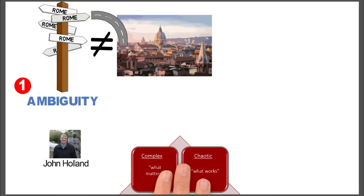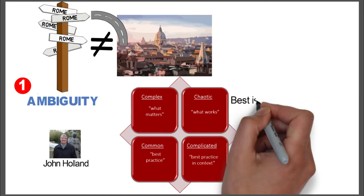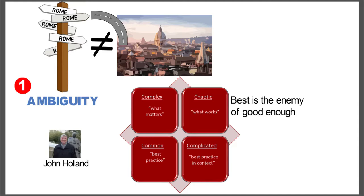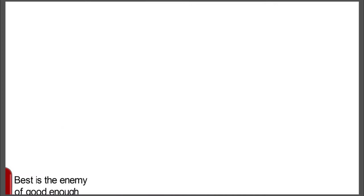The neat thing about that is the current concepts we're learning with regards to John Holland's ideas on complexity. In the world of complexity, the best is the enemy of good enough. So there isn't a best road to Rome. The idea of ambiguity is really being proven out in today's concept of complexity and how we deal with complexity. So they're kind of in sync.